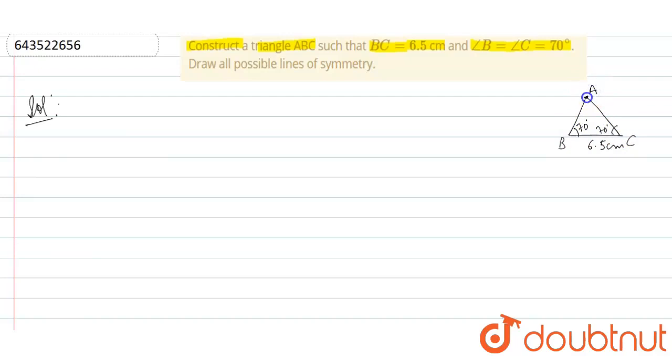So, let me start. We are given that BC is equal to 6.5 cm. Angle B is equal to angle C is equal to 70 degrees.